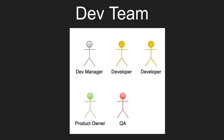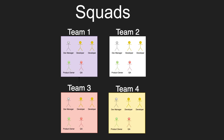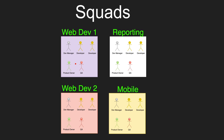As your team starts to get larger, you may form additional teams called squads. Each team will be made up of the same structure with developers, dev managers, QAs, and product owners. And as you continue to evolve, these teams may even specialize in different areas. For example, we have two web development teams who may specialize in different areas of the product. We also have a reporting team and a mobile development team.